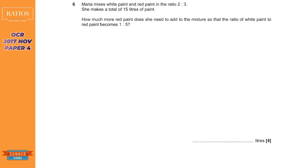What's up guys, Mountain Maths here. Let's get started with ratios. A nice question from OCR: white paint and red paint is mixed in the ratio of two to three, and Maria makes a total of 15 liters of paint.